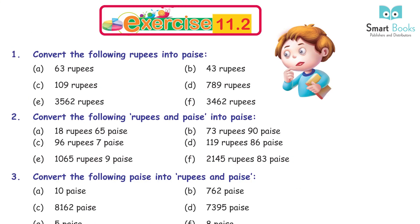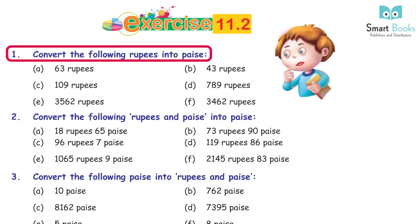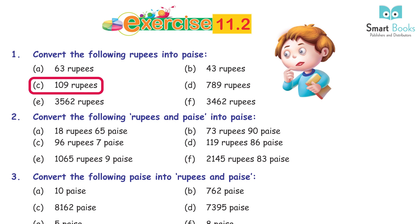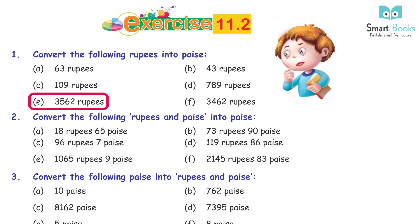Exercise 11.2, Question 1: convert the following rupees into paise. a. 63 rupees = 6300 paise. b. 43 rupees = 4300 paise. c. 109 rupees = 10,900 paise. d. 789 rupees = 78,900 paise. e. 3562 rupees = 3,56,200 paise. f. 3462 rupees = 3,46,200 paise.